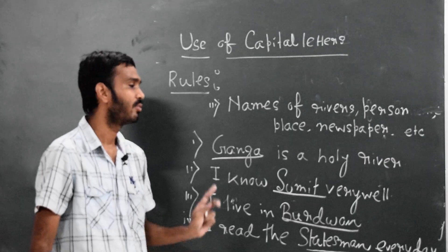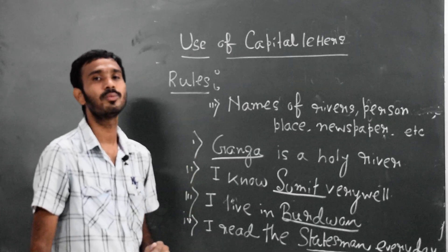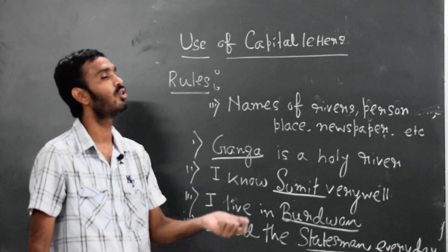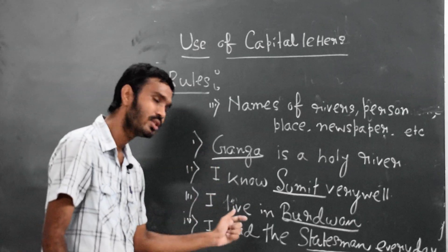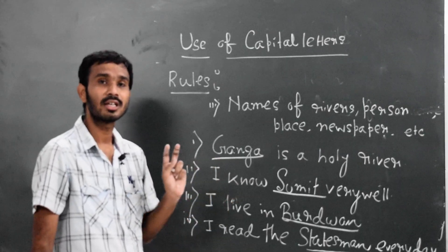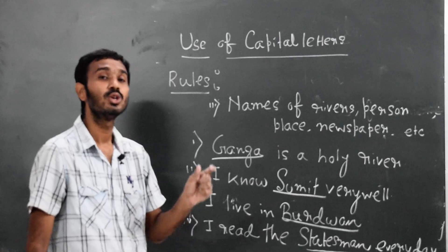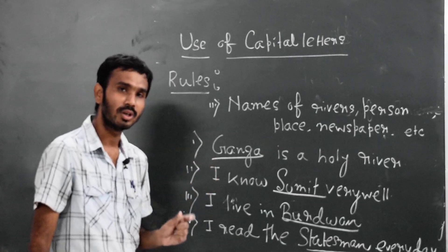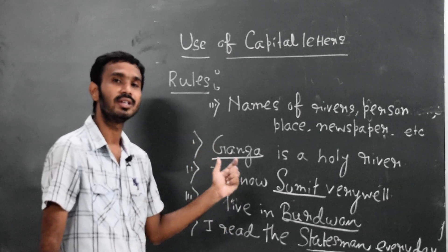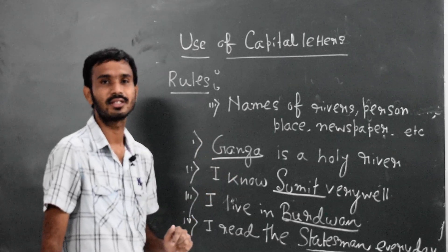So the three basic points we need to follow when using capital letters: first is the beginning word of every sentence begins with a capital letter; second is the use of 'I'—whenever we use 'I' in the middle, beginning, or end of a sentence, we always use it in capital letter; and third, names of particular rivers, persons, places, newspapers which are unique use capital letters. Keep this in mind and follow up.